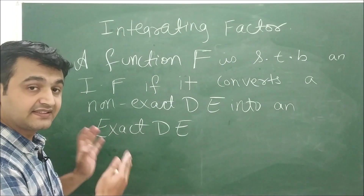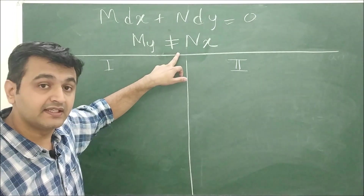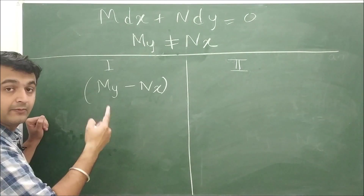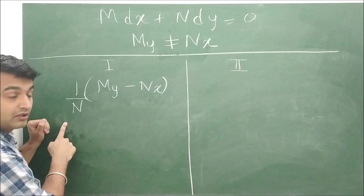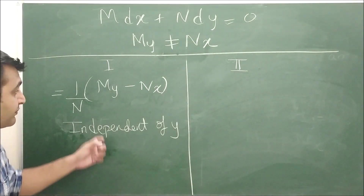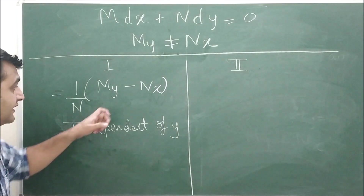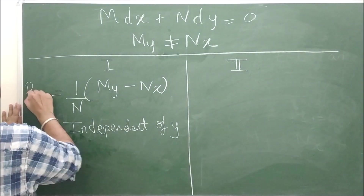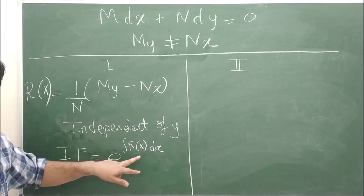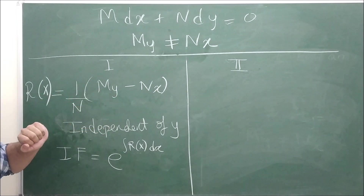Given a non-exact first order linear differential equation, Method 1 says: calculate the quantity (∂M/∂y − ∂N/∂x) divided by N. If this quantity is independent of y — meaning it contains only functions of x or constants — call it r(x). Then the integrating factor is e raised to the integral of r(x) dx.